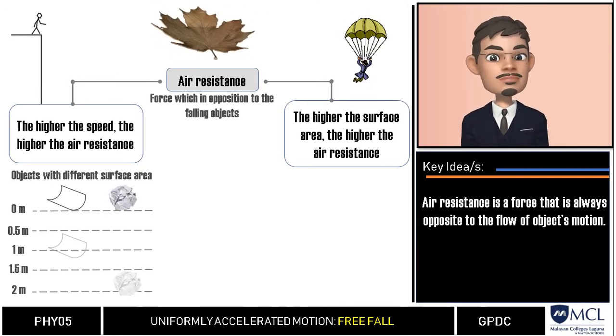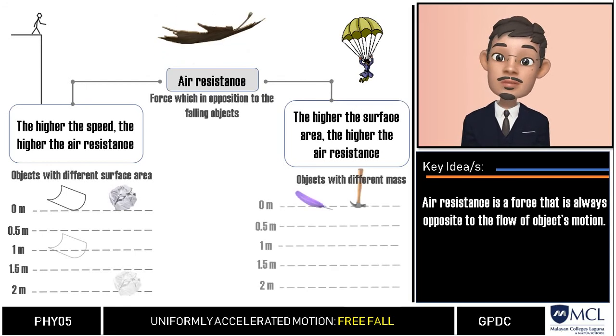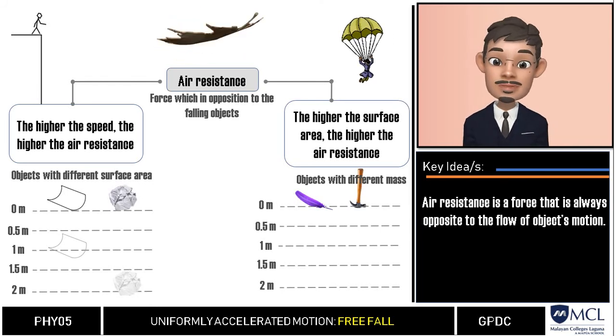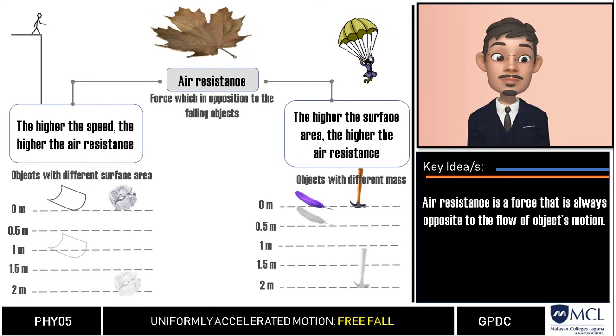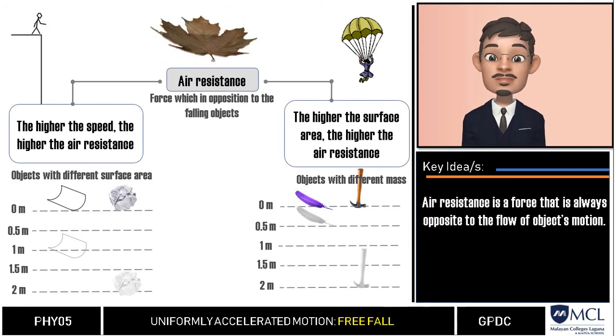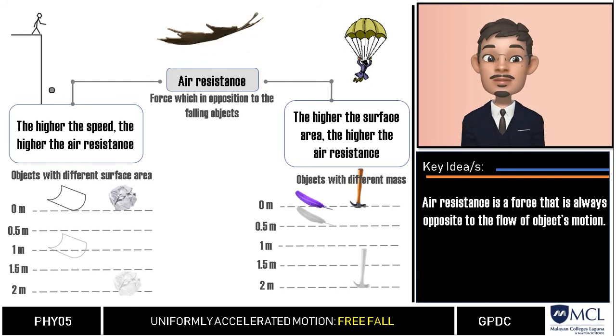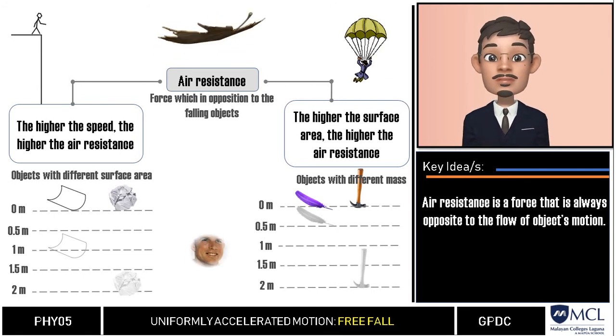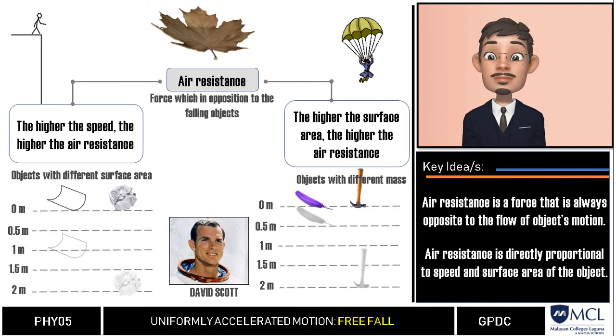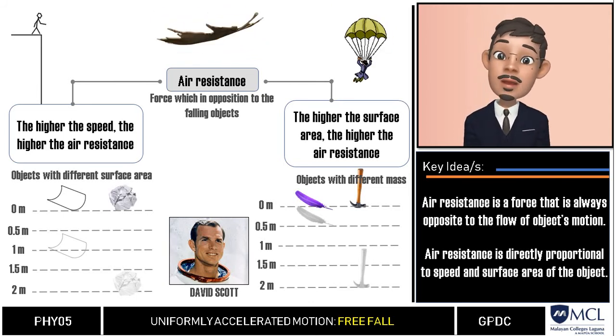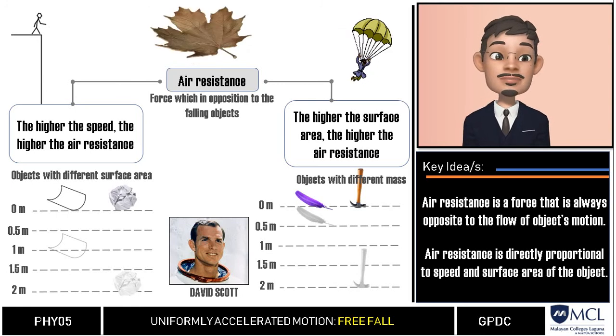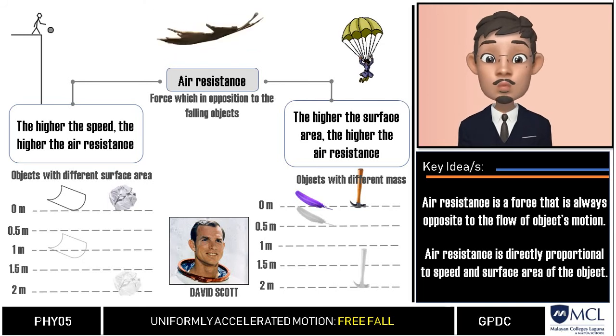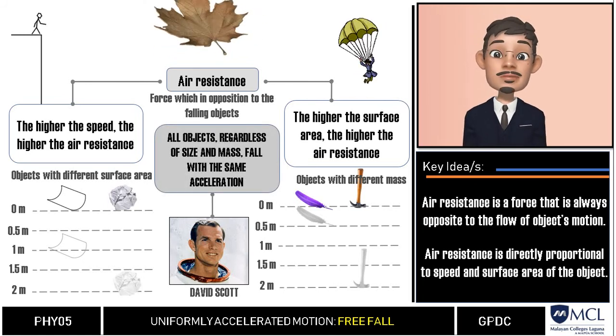How about when a hammer and a feather are dropped at the same height? They have different mass, but because of air resistance the feather will easily be affected by the opposition to its falling motion and will reach the ground last. This same experiment was done on the moon by astronaut David Scott. Because the moon has essentially no atmosphere and therefore there is no air resistance, the hammer and the feather fell at the same time with exactly the same acceleration.